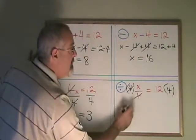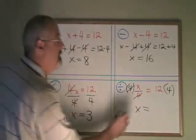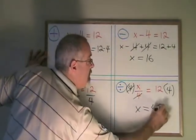These cancel. My x is alone and 12 times 4 is 48. I have my answer.